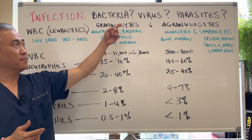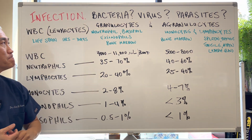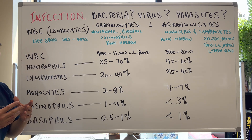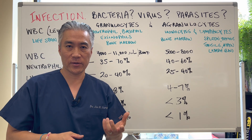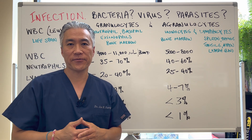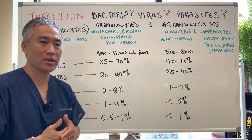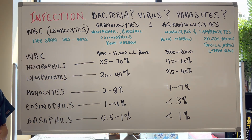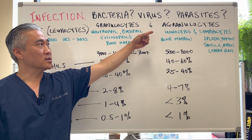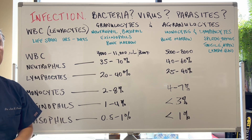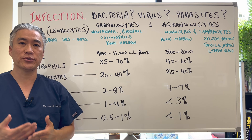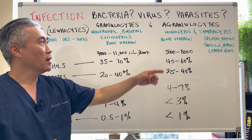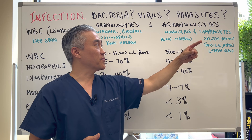You can test in the blood what we call a complete blood count with differential. Within that differential you're going to see white blood cells. White blood cells, or leukocytes, are made up of two different types: granulocytes and agranulocytes. Granulocytes are neutrophils, basophils, and eosinophils, which are produced in the bone marrow. Agranulocytes are monocytes and lymphocytes.